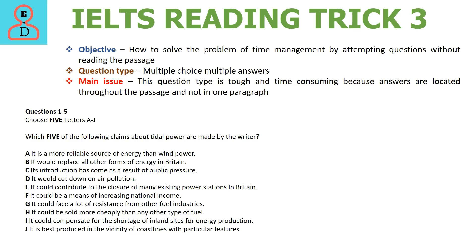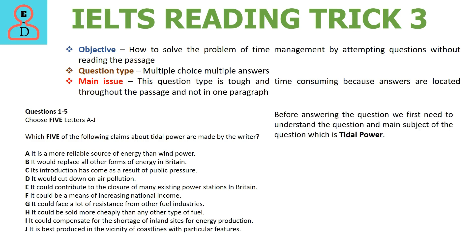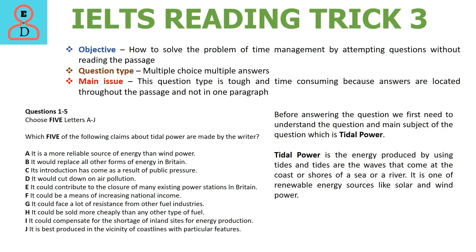Let's look at the example we are going to solve today. In the question, we have options A to J and we have to choose 5 options which the writer has mentioned in the passage — and remember, we are not going to read the passage at all. Please note that the main subject in the question is Tidal Power. Tidal Power is the energy produced using tides, which are waves that come at the coast or shores of a sea or a river. It is one of the renewable sources of energy like solar and wind power.